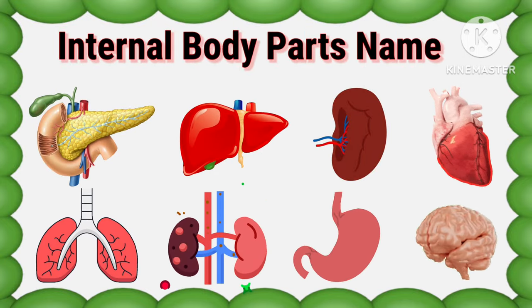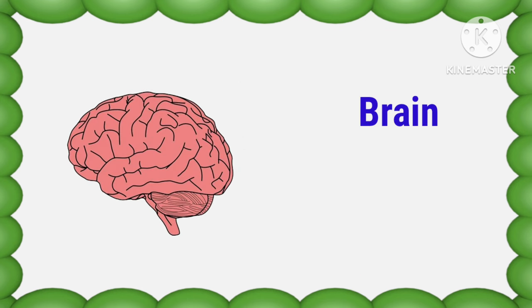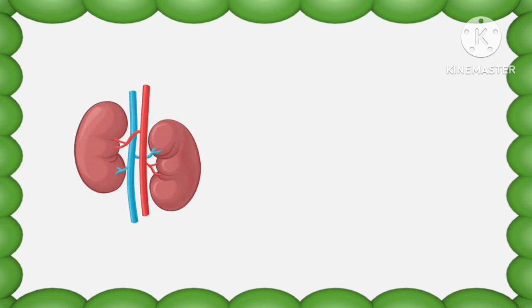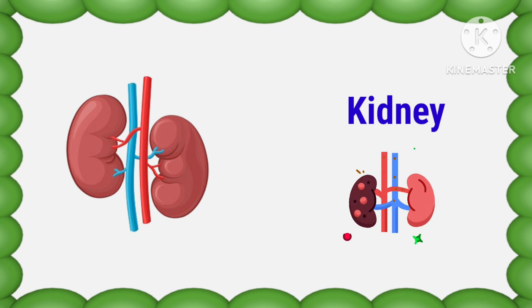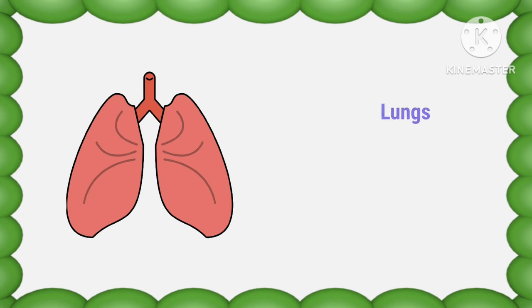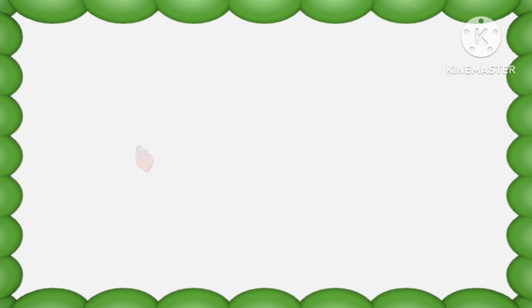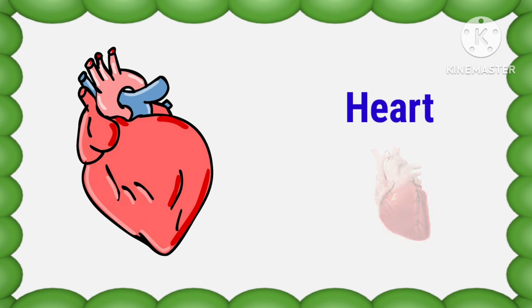Hey kids, let's learn internal body parts names! Let's begin. This is brain — B-R-A-I-N — brain. This is how our brain looks like. Kidney — K-I-D-N-E-Y — kidney. Lungs — L-U-N-G-S — lungs. These are our lungs. Heart — H-E-A-R-T — heart. This is our heart.